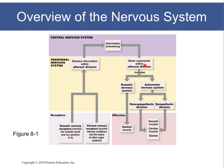An easy way to remember the difference between the afferent and efferent divisions is that the 'A' of afferent is also found in the brain. So the afferent division is sending information towards the brain, or towards the CNS, while the efferent division, or 'E', is sending information away — it's exiting the CNS.